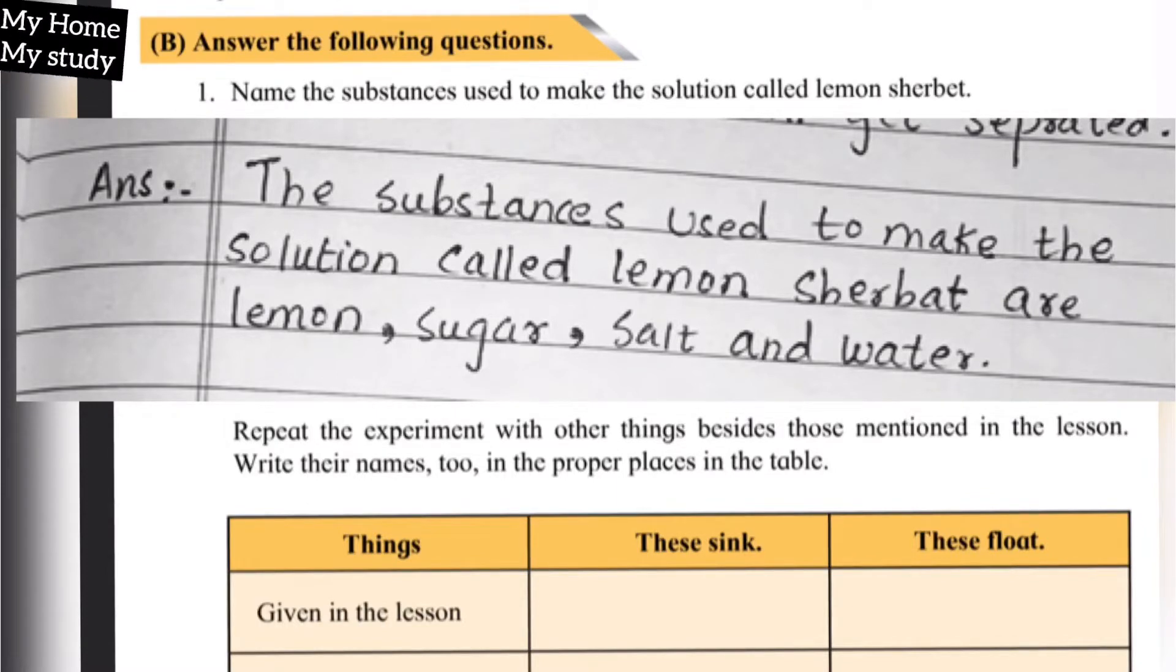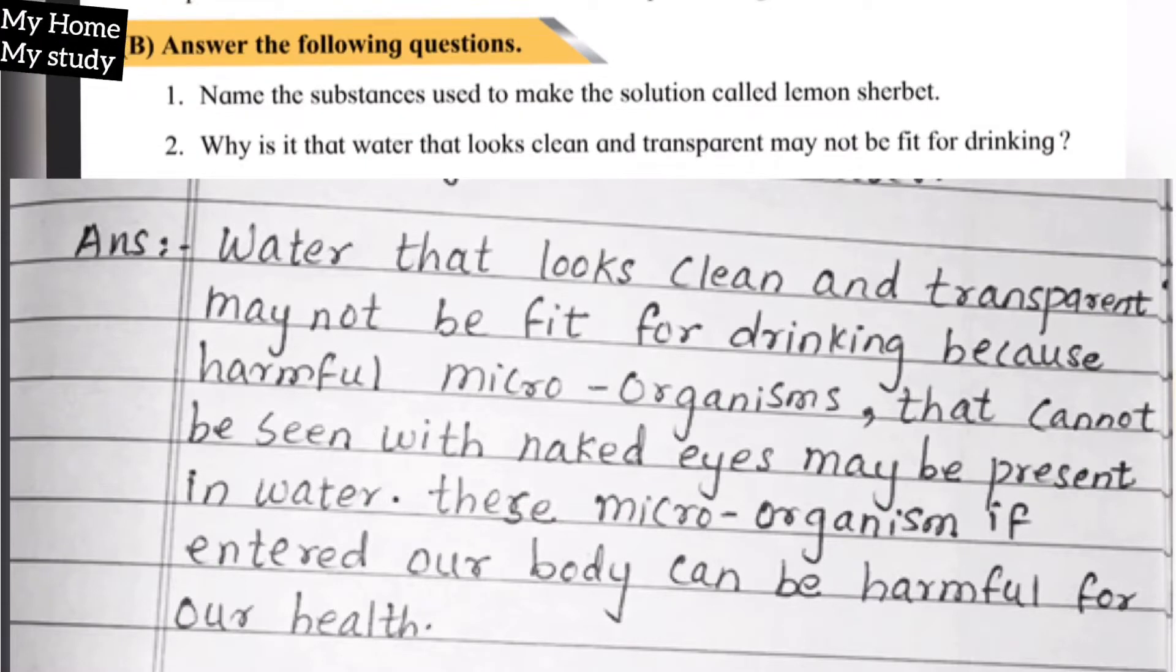Next one: Why is that water that looks clean and transparent may not be fit for drinking? Answer: Water that looks clean and transparent may not be fit for drinking because harmful microorganisms that cannot be seen with naked eyes may be present in water. These microorganisms, if they enter our body, can be harmful for our health.